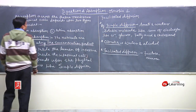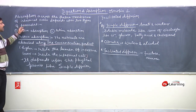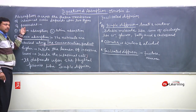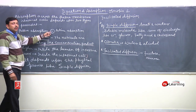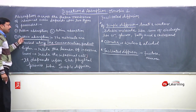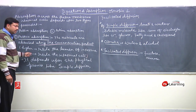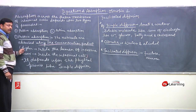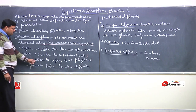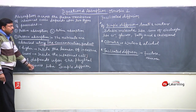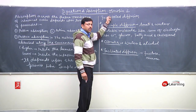Absorption across the plasma membrane of the intestinal cell depends upon two types of processes: number one, passive absorption, and number two, active absorption. In passive absorption, nutrients are absorbed along the concentration gradient — from higher concentration to lower concentration. It depends upon physical processes like simple diffusion, osmosis, and facilitated diffusion.